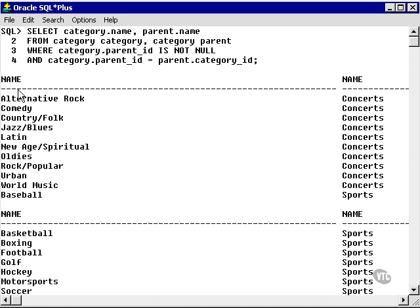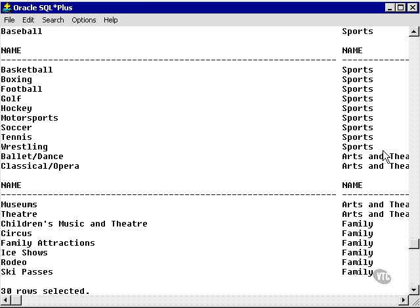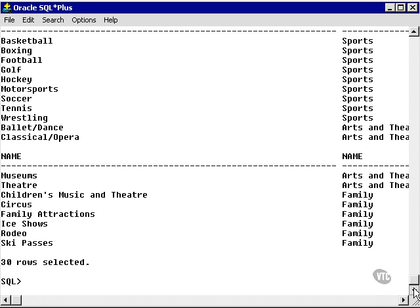So you can see that alternative rock, country, folk, etc. are concerts, as in music. Baseball, basketball, sports, ballet, dance, classical opera, arts and theater, etc. That's what I mean by parent category and subcategory.